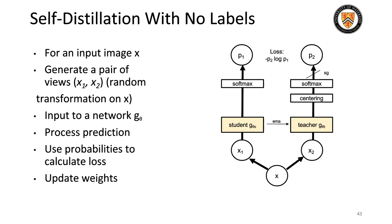We input them into the network G-beta. The diagram shows one student and one teacher, denoted by S and T respectively, but you could have more students. We make a prediction as shown by the softmax, then use the probabilities to calculate the cross entropy loss and update the weights. The teacher is influenced by an exponential moving average from the students — EMA. There's a centering operation to stop dimension collapse in the teacher network, and a stop gradient so the teacher's values don't update.